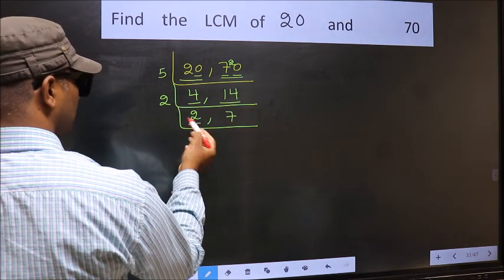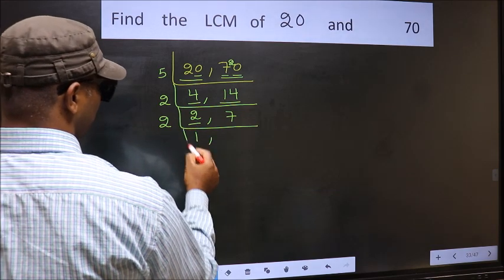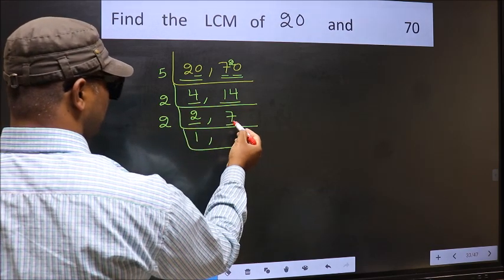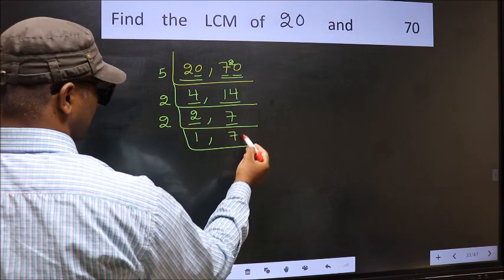Now here we have 2. 2 is a prime number, so 2 times 1 is 2. The other number 7 not divisible by 2, so we write it down as it is.